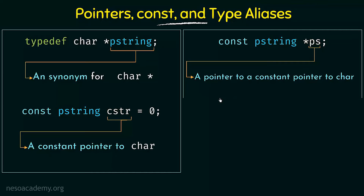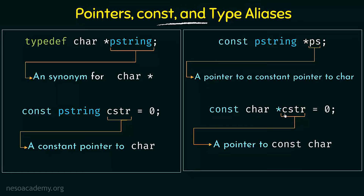Now let's come to the last declaration: const char* cstr = 0. Here we are not using the pstring type alias but making a direct declaration. In this case, cstr is a pointer to a constant character. The asterisk signifies that cstr is a pointer, and it is pointing to a constant character. We already studied that when const appears with the base type it modifies the base type.